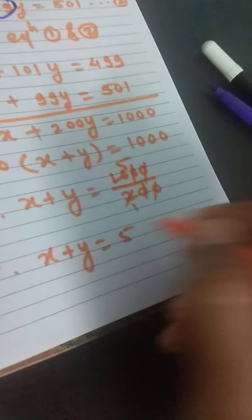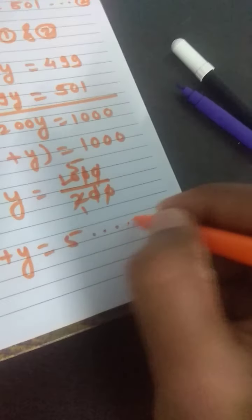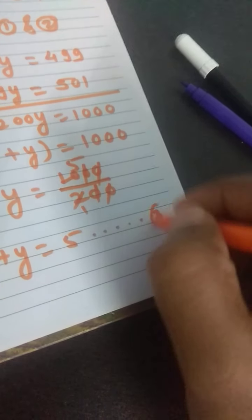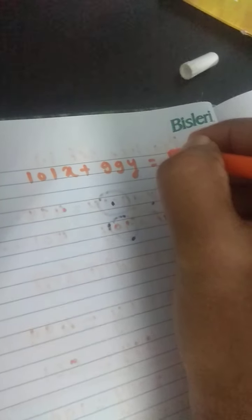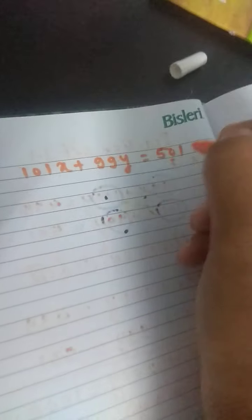Consider this as Equation 3. Next, subtracting Equation 1 from 2. Equation 2 is 101x plus 99y equals 501.